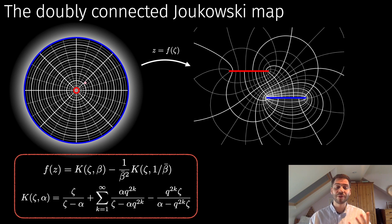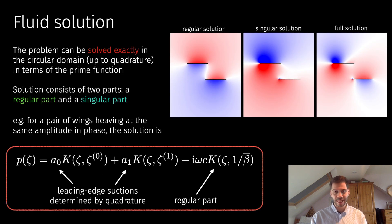Now we're equipped with these mappings from the circular domains to the slit domain. We can construct the solution to the fluids problem inside the circular domain. I'll just briefly outline how we do that.